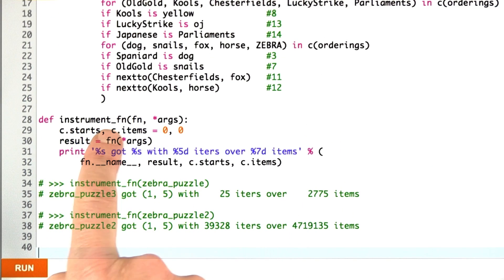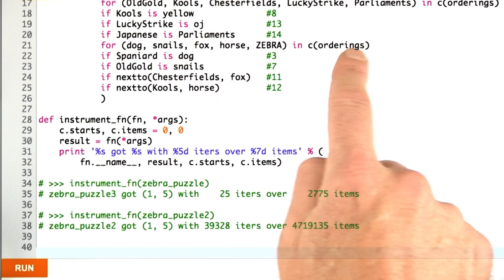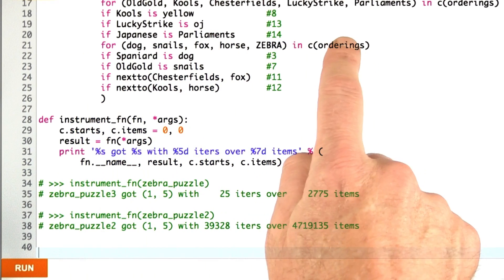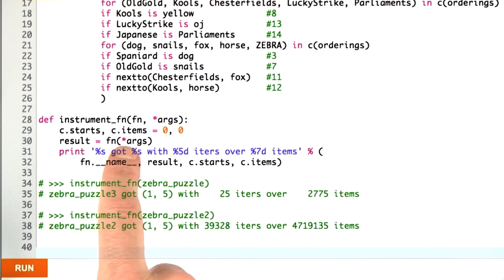What I've done here is defined a function called instrument function, which will count the calls that it takes to execute the calling of a function with the arguments. I haven't shown you the definition of c yet, but when I show it to you, I will see that it keeps track of two counts: the number of starts of the times we started an iteration, started the for loop that was measured with the c function, and the number of items that we got through, so how many times did we go through that for loop.